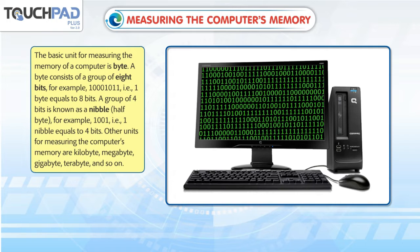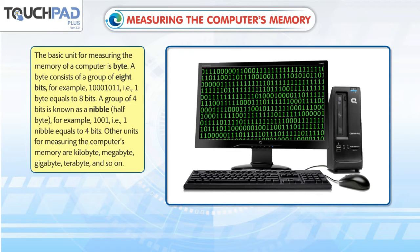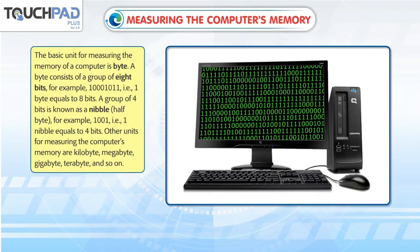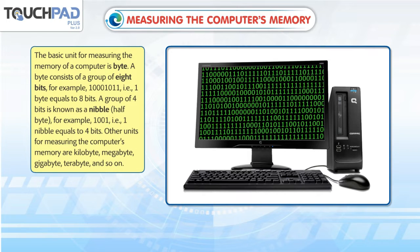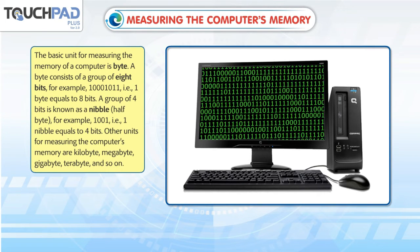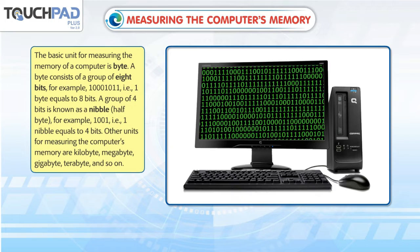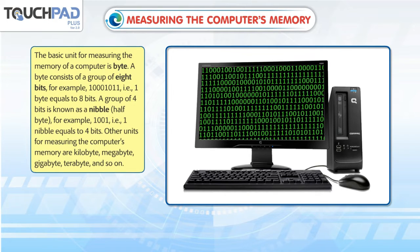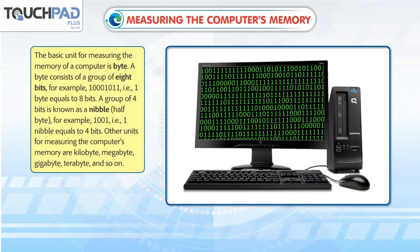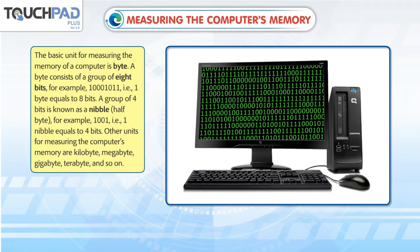A group of 4 bits is known as a nibble, or half byte. For example, 1-0-0-1. That is, 1 nibble equals 4 bits.